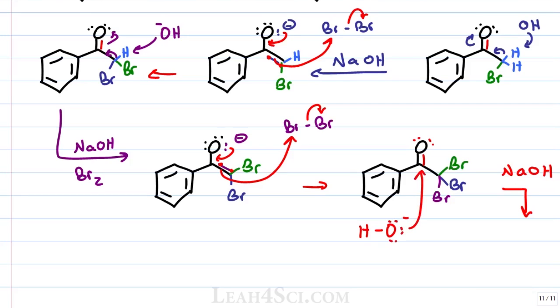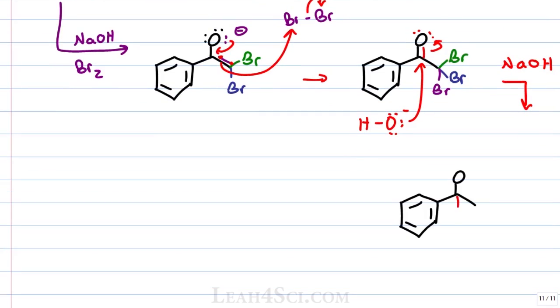OH minus will attack the carbonyl carbon kicking up the electrons one more time but this time we're not creating an enolate, we're simply creating a negative oxygen atom. You should recognize this as a tetrahedral carbonyl addition intermediate, in this case a carbon atom with a negative and neutral oxygen and a good leaving group.